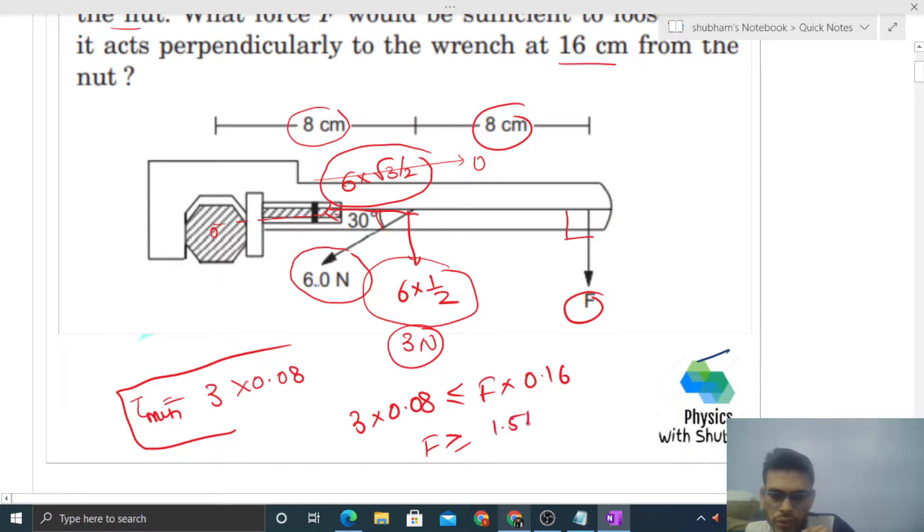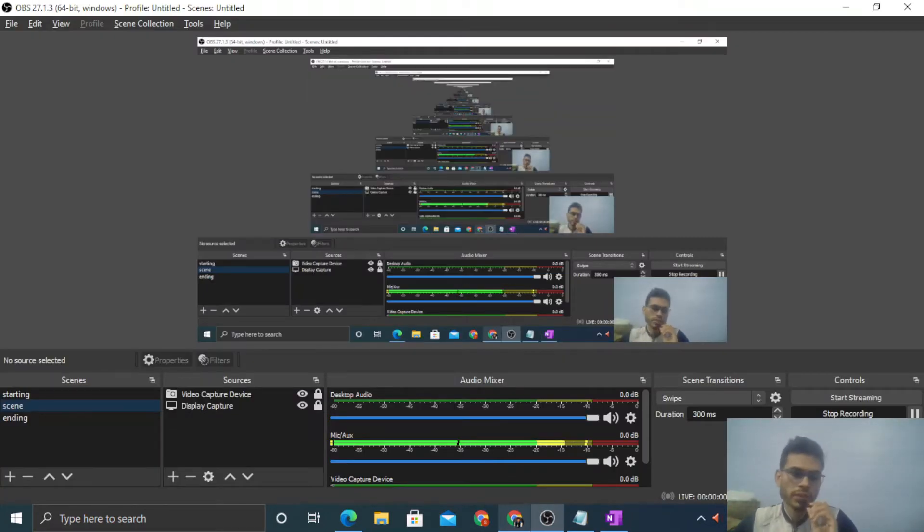So the minimum value of F is 1.5 N. I think you have understood. Let me know if you still have any confusion, we can discuss further. Keep working hard, best of luck, bye!